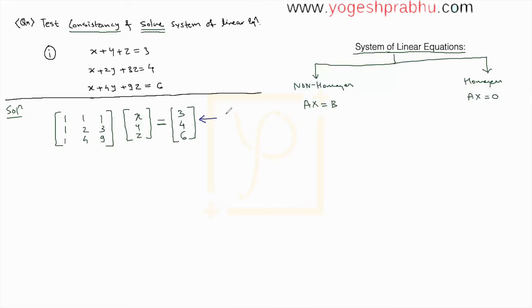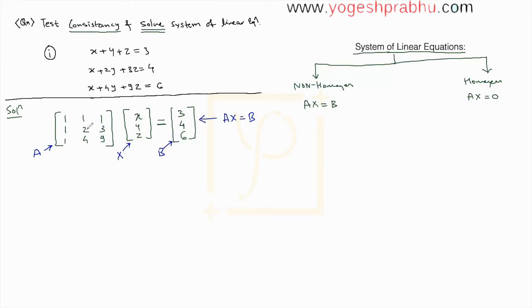We can clearly see this is of the form Ax = b, where the right hand side is not zero but a matrix b. Matrix A is the coefficient matrix, matrix X is the variable matrix, and matrix b is the right hand side constant matrix. We have now expressed the system in the form Ax = b.